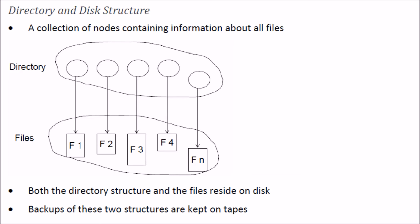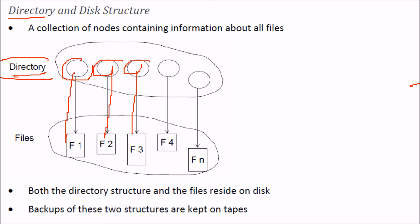Let's talk about directory and directory structure. If you are using some operating system, a directory can simply be assumed to be a collection of files. But when we actually go to the disk and try to find out what the directory structure is — a directory is the collection of nodes containing information about files. This directory is simply the collection of nodes, nothing else, containing information about these files.